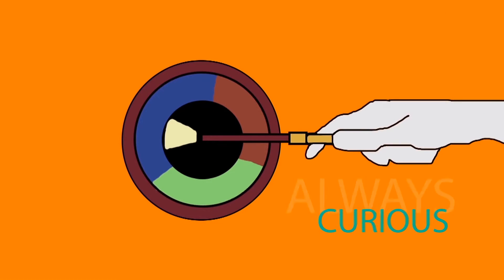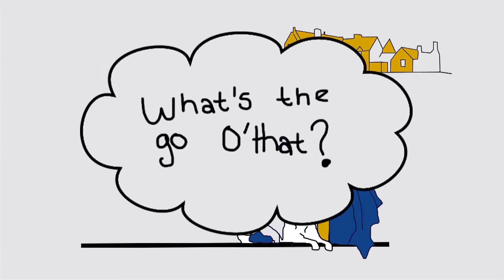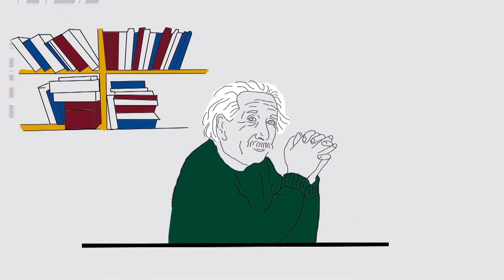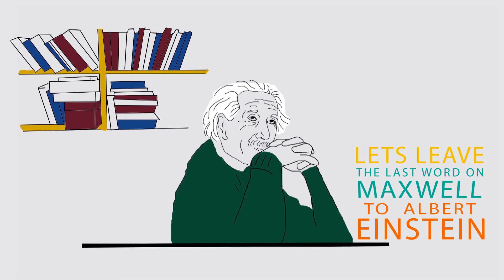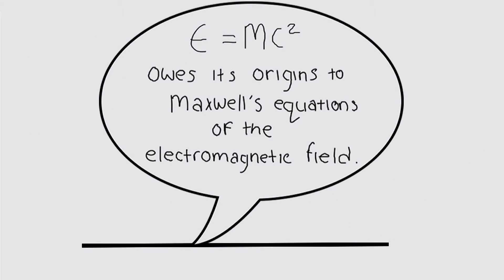He was always curious, questioning, what's the go of that, and using maths to help us understand the world around us. Let's leave the last word to Albert Einstein. The special theory of relativity owes its origins to Maxwell's equations of the electromagnetic field.